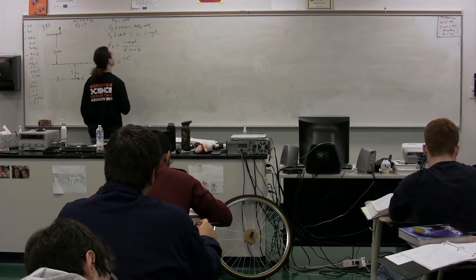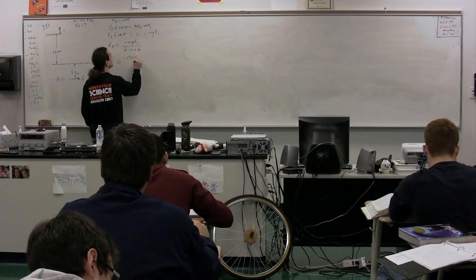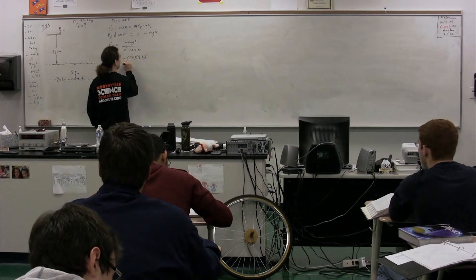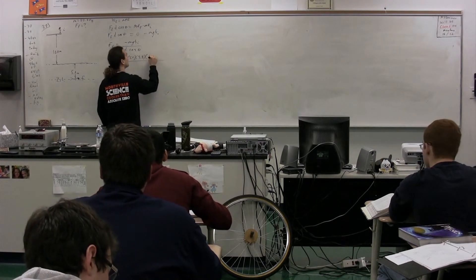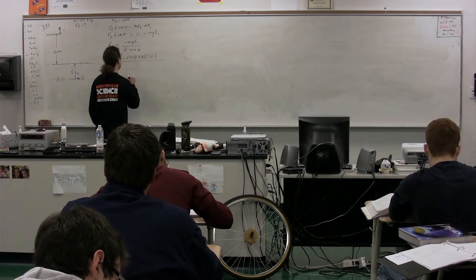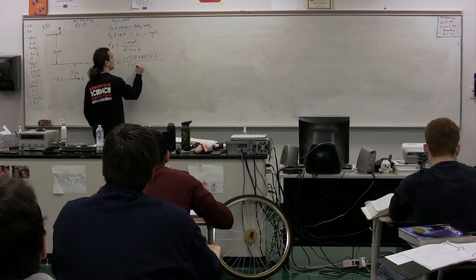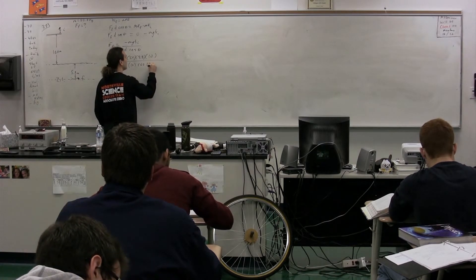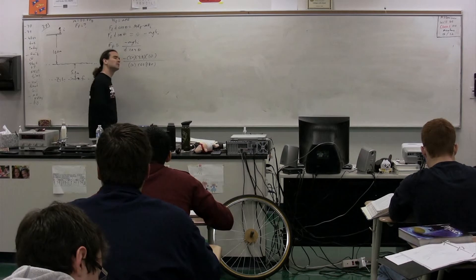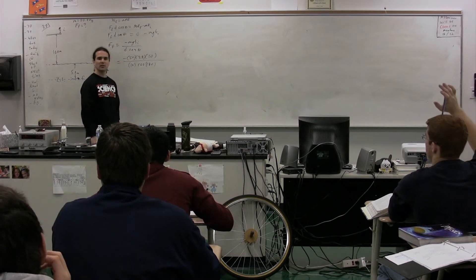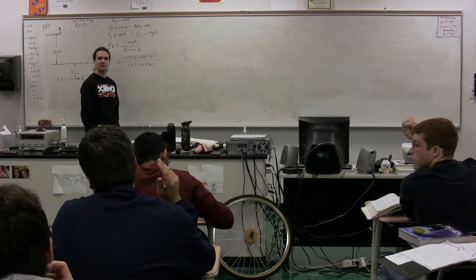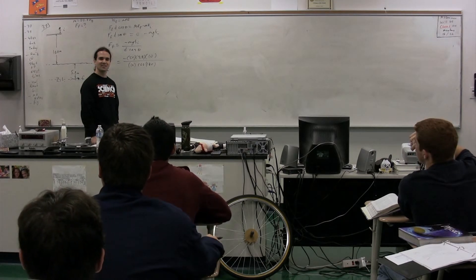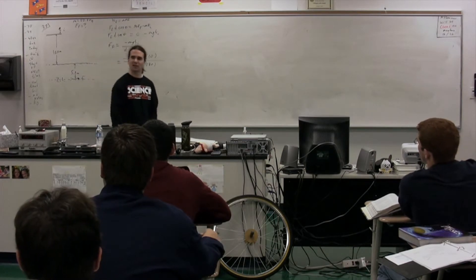Mass? The mass is 50 kilograms. G? 9.8. Positive or negative? Positive. Are you positive? I am positive. Good. Height initial? The height initial is 10 meters. Divided by d? Is 10 meters. Multiplied by the cosine of? Cosine of 180. How do you know it's 180 degrees? Because it's a straight line. I don't know what that means.